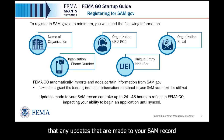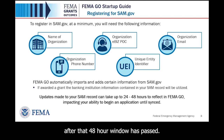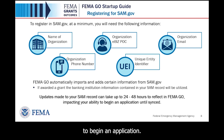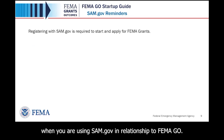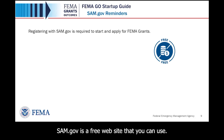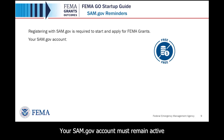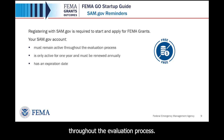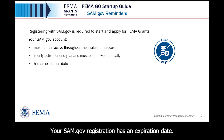Please note that any updates made to your SAM record may take 24 to 48 hours to reflect in FEMA GO. Please make sure to check it after that 48-hour window has passed. This 48-hour window can impact your ability to begin an application since you need to wait until it is synced before you can begin. Please keep this in mind when registering in SAM.gov. Your SAM.gov account must remain active throughout the evaluation process — it is only active for one year and must be renewed annually, and your SAM.gov registration has an expiration date.